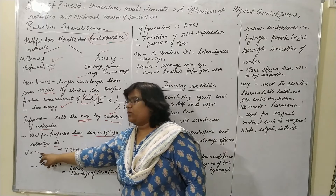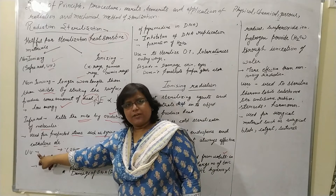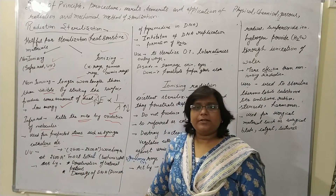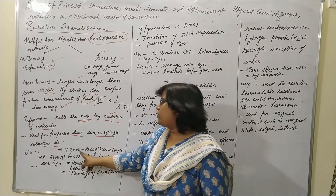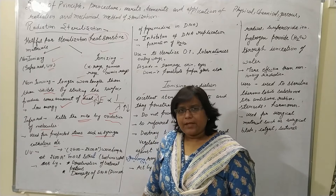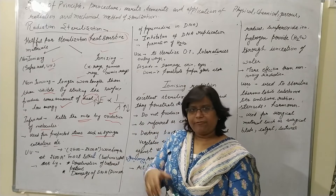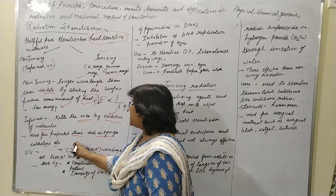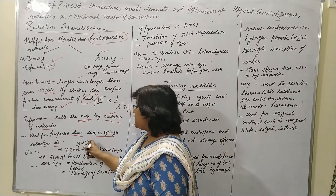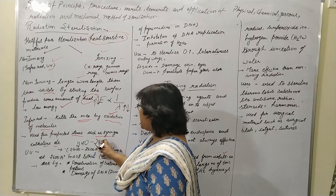Now, coming to ultraviolet radiation. The ultraviolet radiation has a range of 2400 to 2800 angstrom. In some books don't get confused — they have written it in nanometers, so in nanometers it is 240 to 280 nanometers.